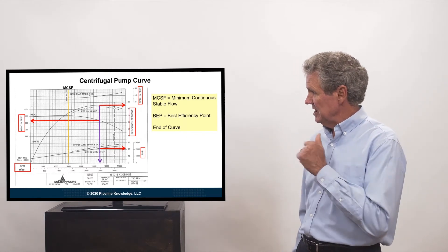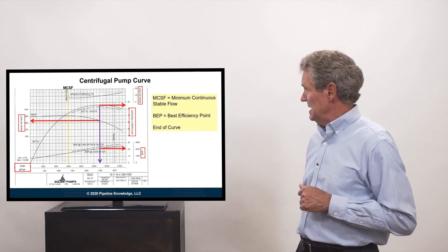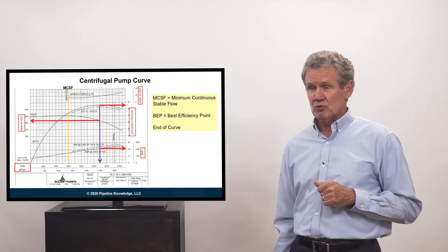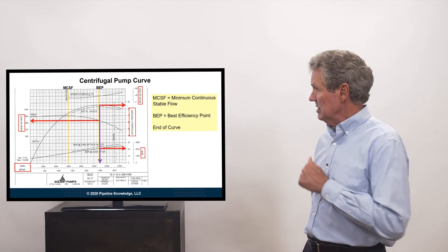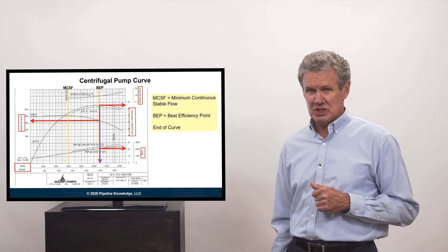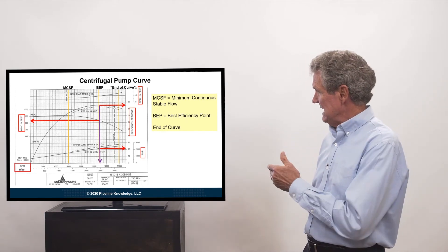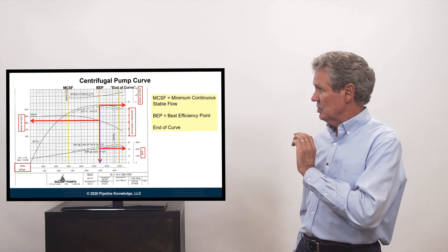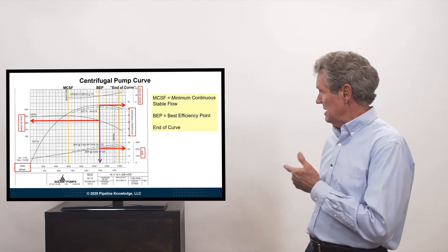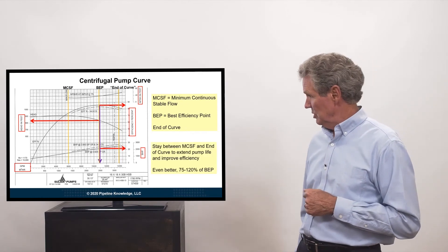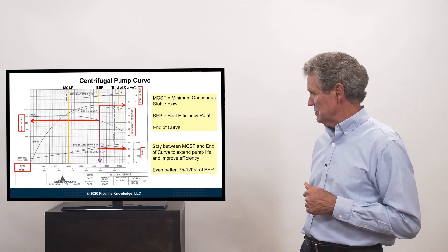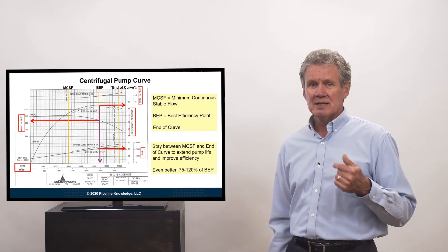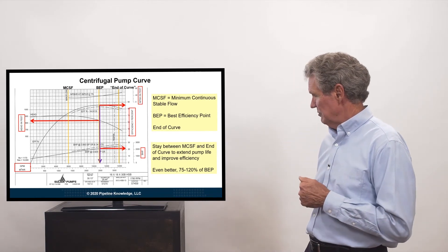So over there, where the yellow line comes down, the minimum continuous stable flow. Here, the best efficiency point. And then, we have the end of the curve. So you don't want to go off the end of the curve or go down below that minimum continuous stable flow. You want to stay between those points to extend the pump life and to improve efficiency.